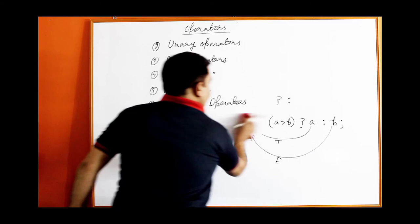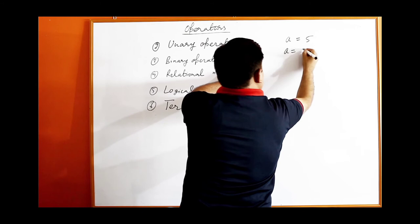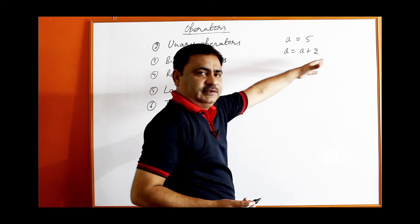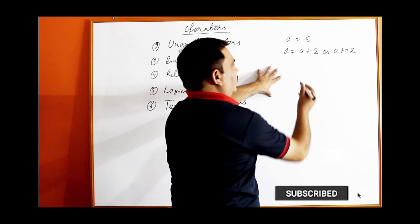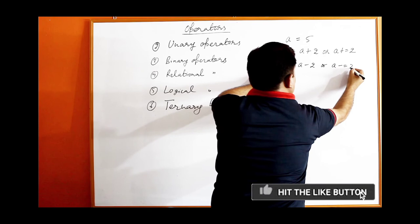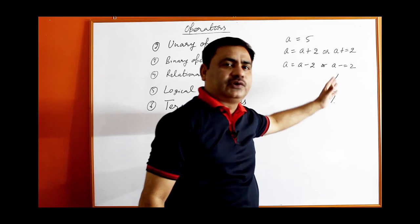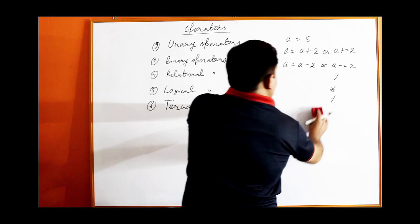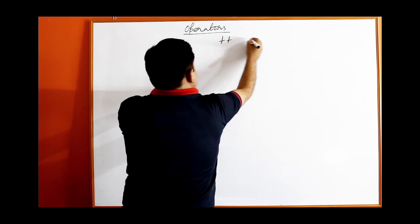There are also short notation assignment operators. If a equals 5 and you write a equal to a plus 2, a becomes 7. This can be written shorthand as a += 2. Similarly a -= 2 for subtraction. The same applies for divide, multiply, and modulus operators — you can use /=, *=, and %= as short notations.